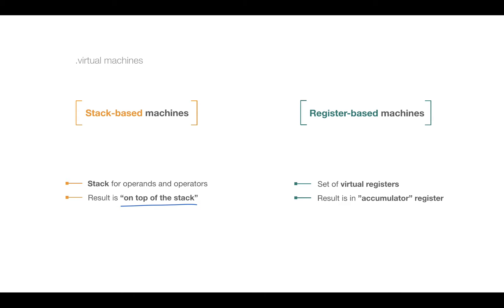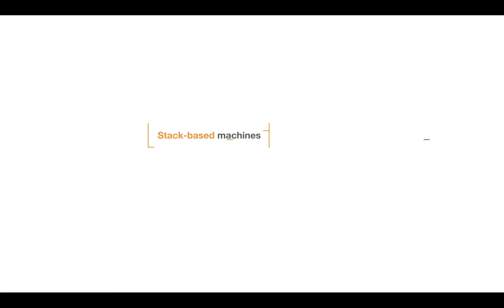The convention for register machines is that the result of the final calculation is placed in a special register called the accumulator. For example, on Intel architecture it's the EAX register, and in your own virtual machine it can be whichever register you choose.